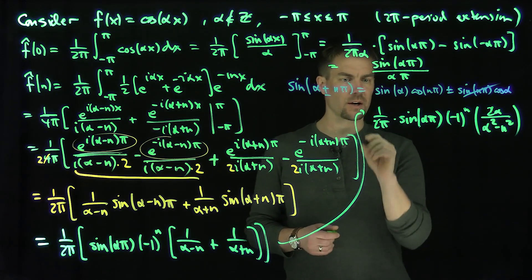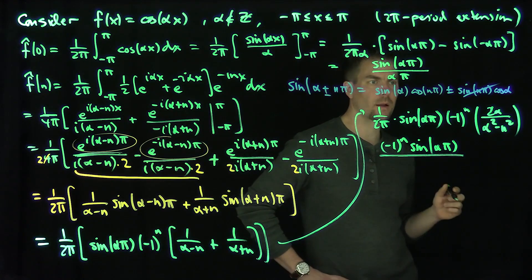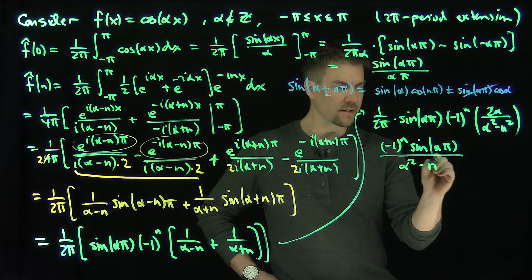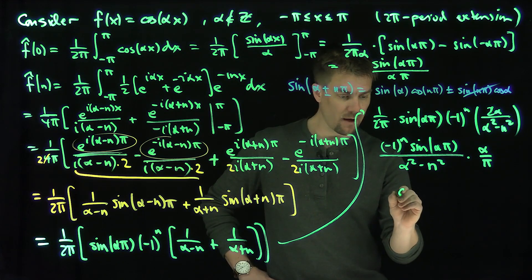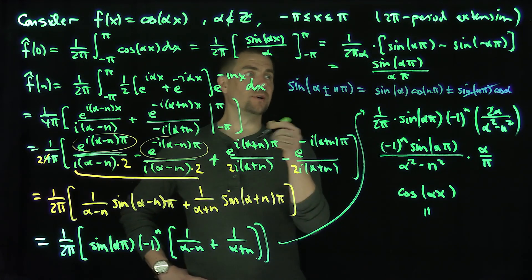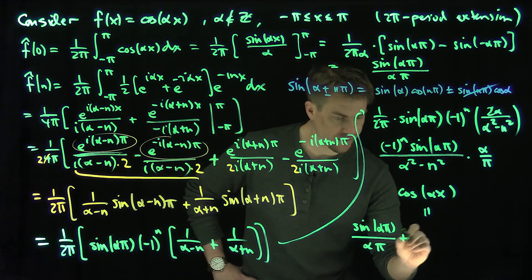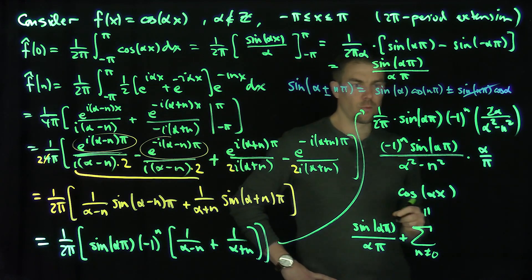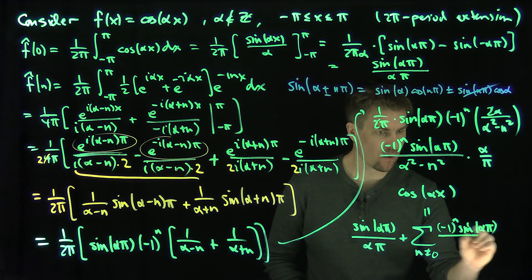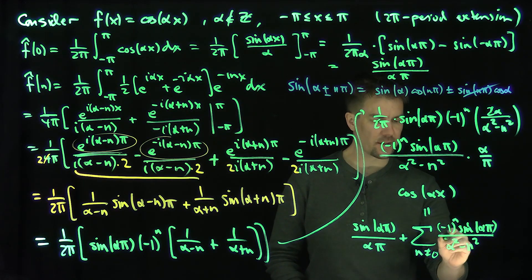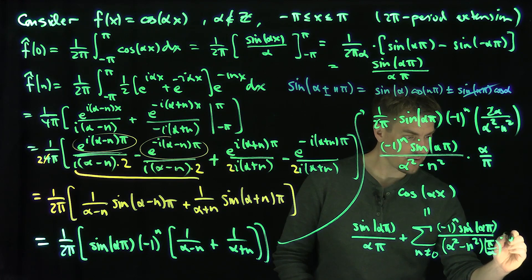The 2s cancel, and the full coefficient f̂(n) becomes (-1)^n sin(απ) · α over π(α²-n²). Writing out the complete Fourier representation: cos(αx) equals sin(απ)/(απ) plus the sum over n not equal to zero of (-1)^n sin(απ) · α over π(α²-n²) times e^(inθ).